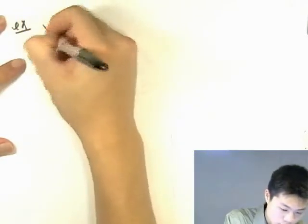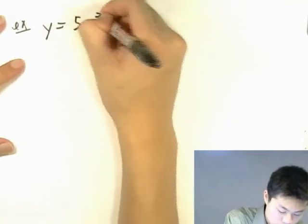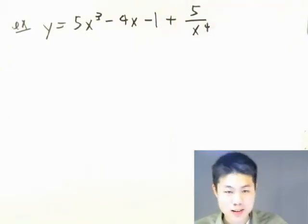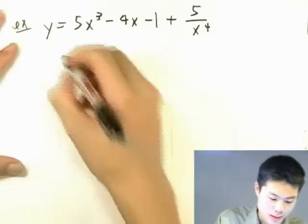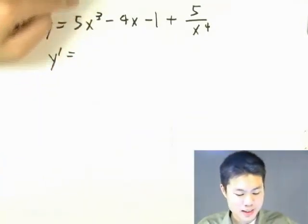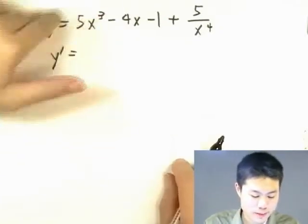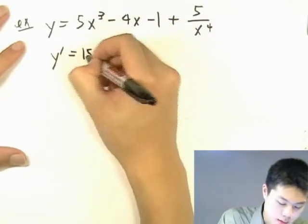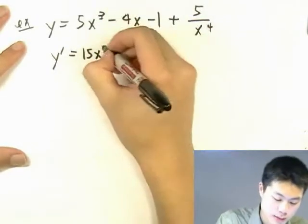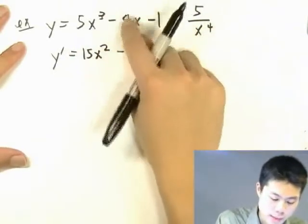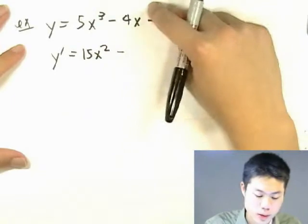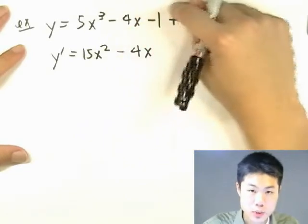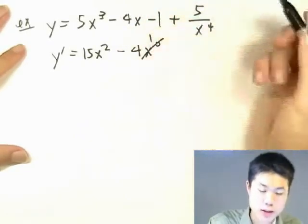For example: y equals 5x to the third minus 4x minus 1 plus 5 over x to the fourth. Taking the derivative term by term: for 5x cubed, 5 times 3 gives 15 times x to the 2nd. For negative 4x, that's x to the first, so 4 times 1 is 4, and x to the 1 minus 1 is x to the 0, which is 1, so we get negative 4. For negative 1, that's a constant, so its derivative is 0.